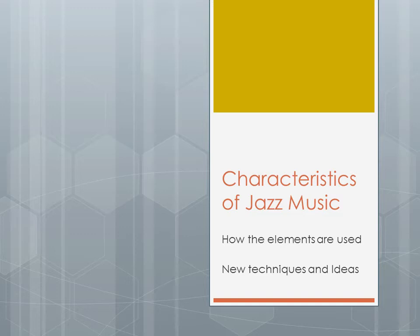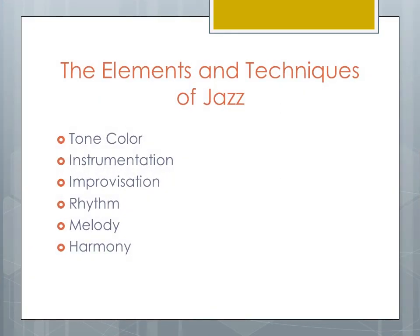Now let's talk briefly about the characteristics of jazz music. We're going to talk about how the elements of music that we've talked about so many times already this semester are used, and we're going to talk about a few new techniques and ideas that relate only to jazz music specifically, and to a few of the other popular styles that today have kind of overtaken classical music. Some of the elements and techniques we're going to talk about are tone color, instrumentation, improvisation, and how rhythm, melody, and harmony are combined together to create the many styles of jazz.